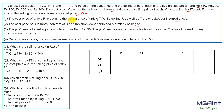The cost price of article R equals the selling price of article T, so call that value x. Since selling R and T both incur a loss, x cannot be 650 — because any selling price would be greater than 650 and a loss would not be possible. Similarly, x cannot be 900 — because any selling price would be less than 900 and a loss would not be possible either.